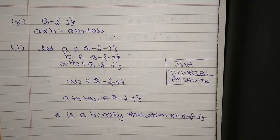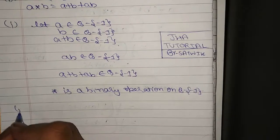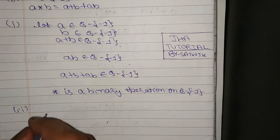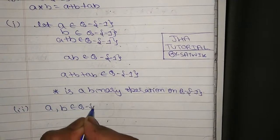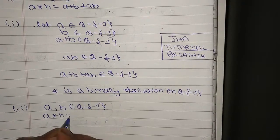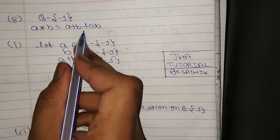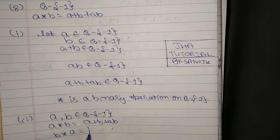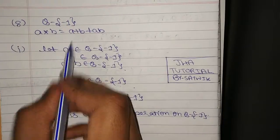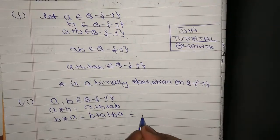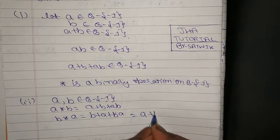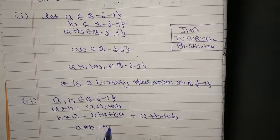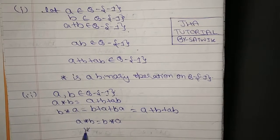Now let's see the second part: proving that star is commutative. Let a, b belong to Q\ {-1}. a★b = a+b+ab. And b★a = b+a+ba. Since a+b+ab = b+a+ba (by commutativity of addition and multiplication of rationals), we have a★b = b★a, which means star is commutative.